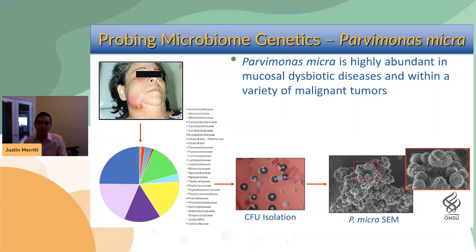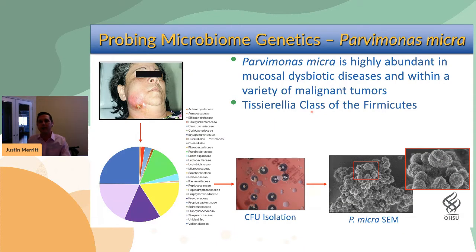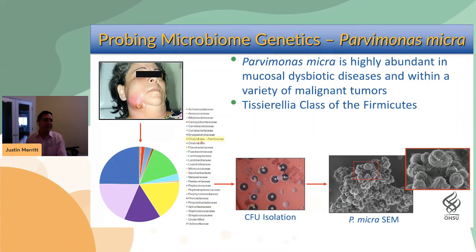Here's an image of what its biofilm looks like. Parvomonas comes from the Tissierellia class of the Firmicutes. These organisms are classic microbial dark matter — this entire class is uncharacterized. Even the phylogeny is a problem: if you do 16S studies and happen to get Parvomonas, oftentimes the pipelines that annotate the phylogeny incorrectly label Parvomonas as a clostridial organism.